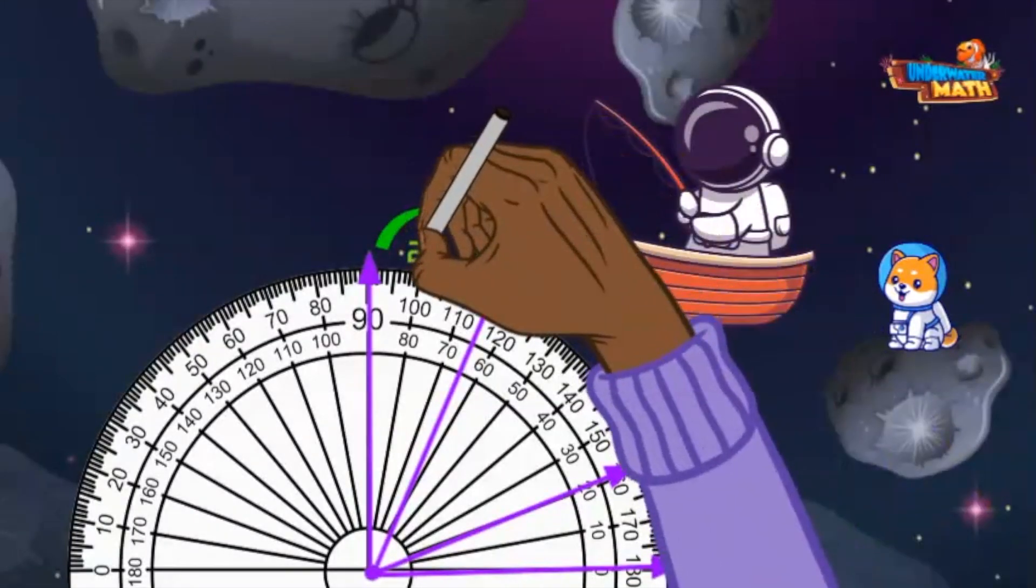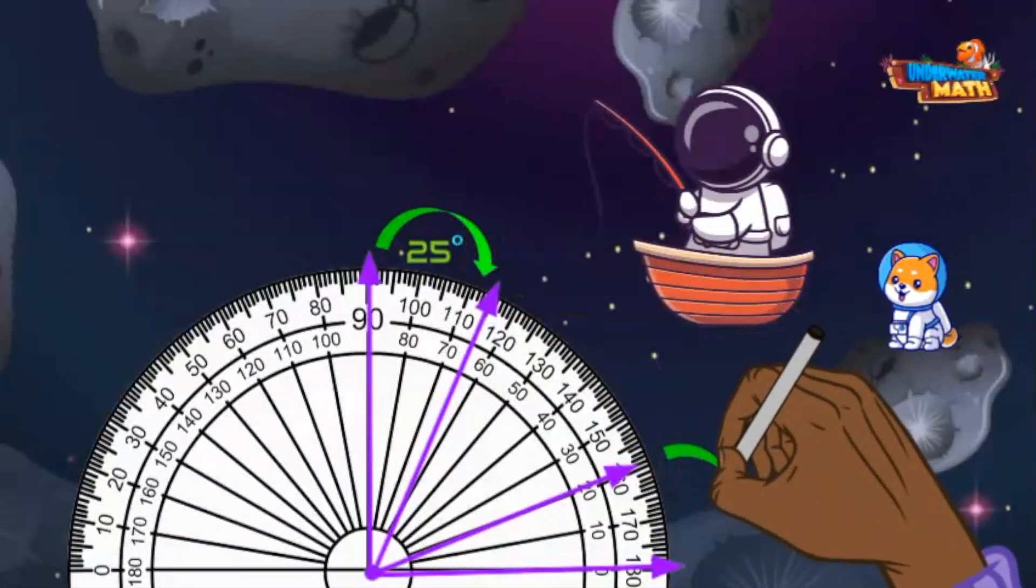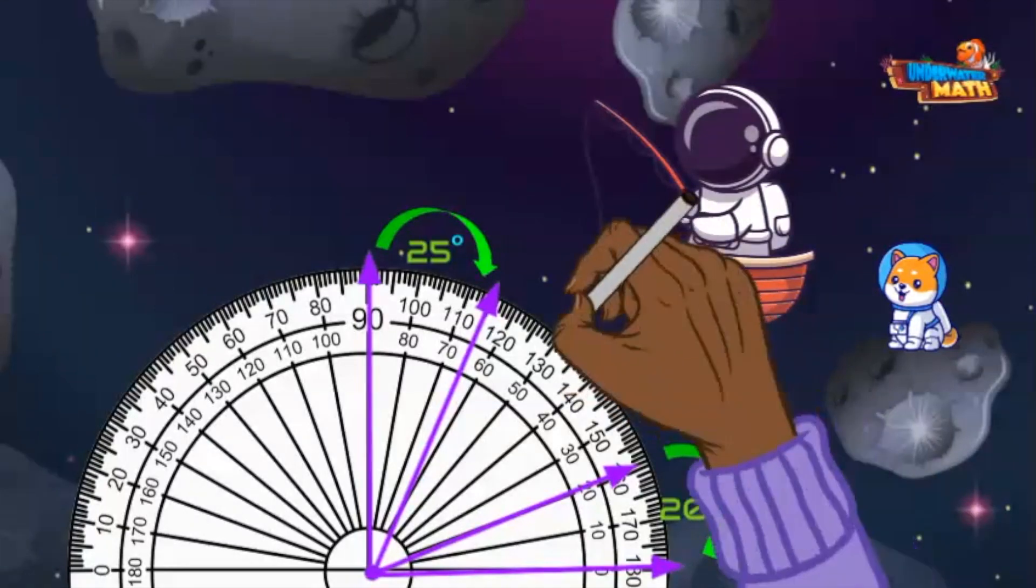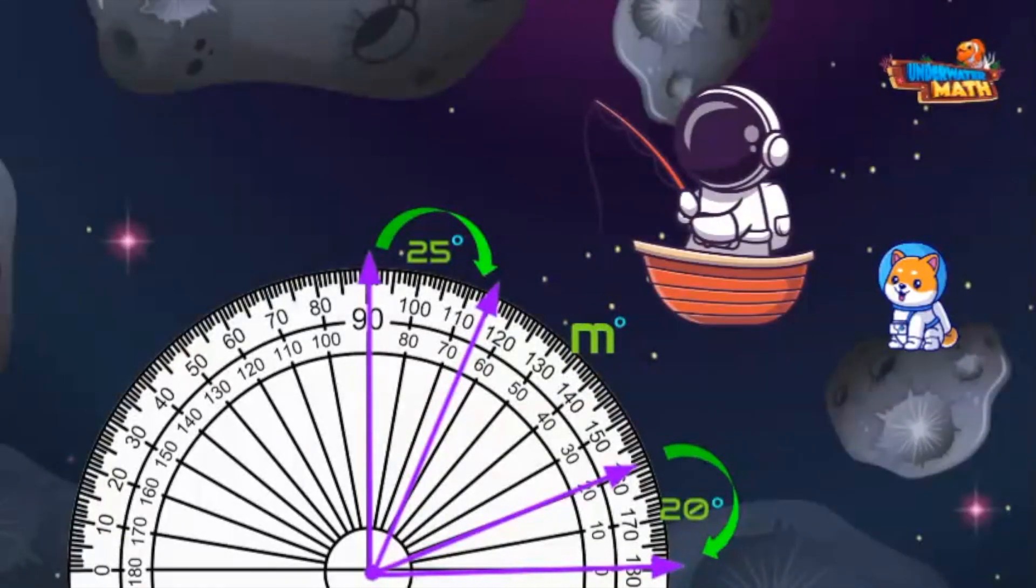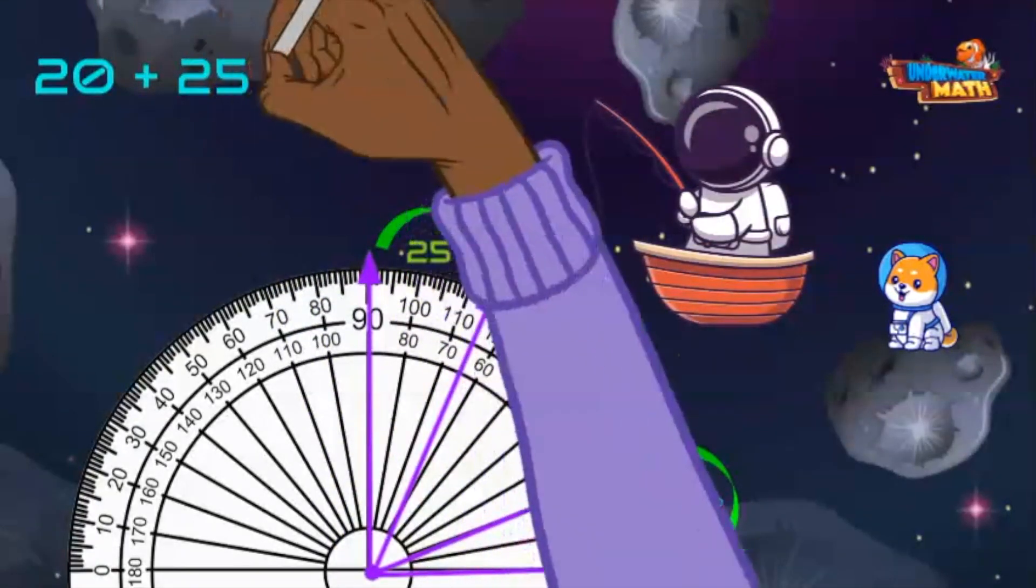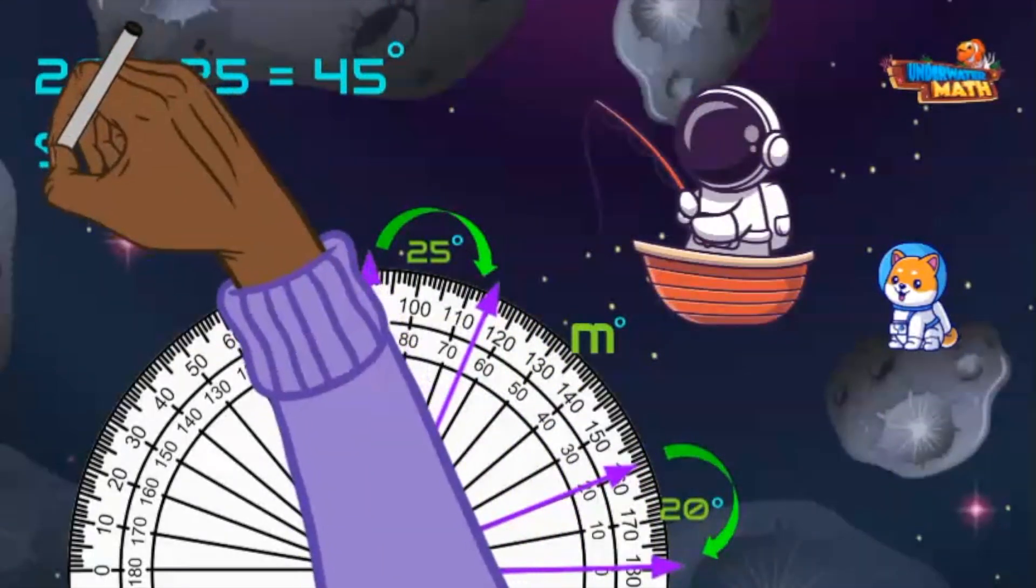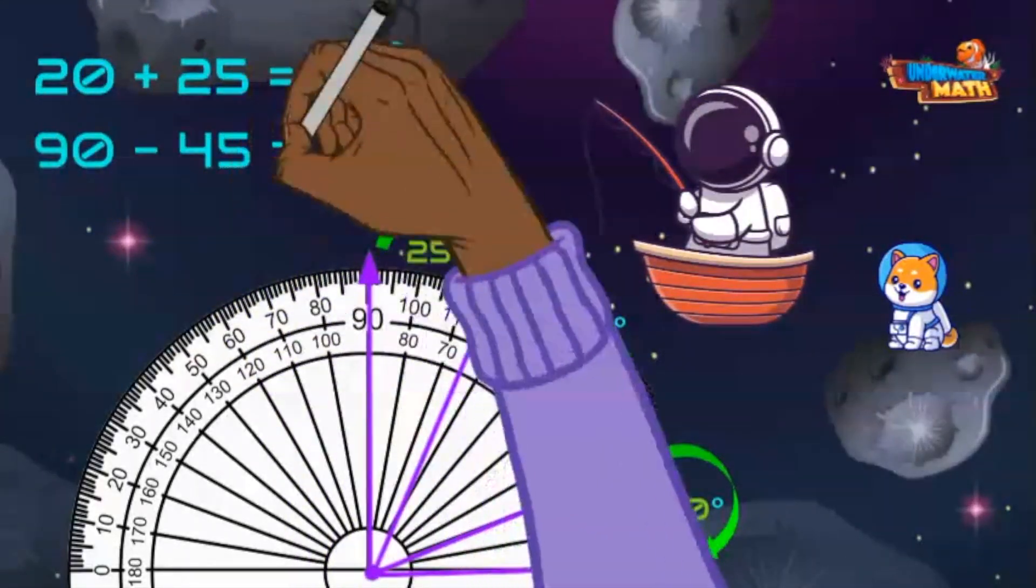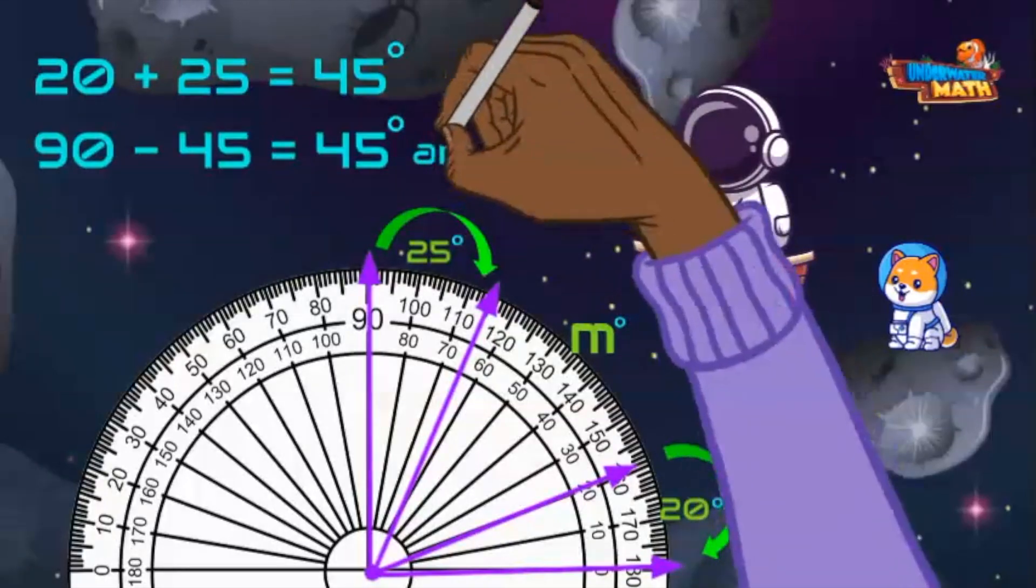This angle has two perpendicular rays and an unknown angle represented by the letter m. The first angle measures 25 degrees and the third angle measures 20 degrees. Using the protractor, the angle measures 90 degrees. If I add the two measurements, they equal 45 degrees. Subtract 45 degrees from the total of 90 degrees equals 45 degrees. The value of m is 45 degrees.